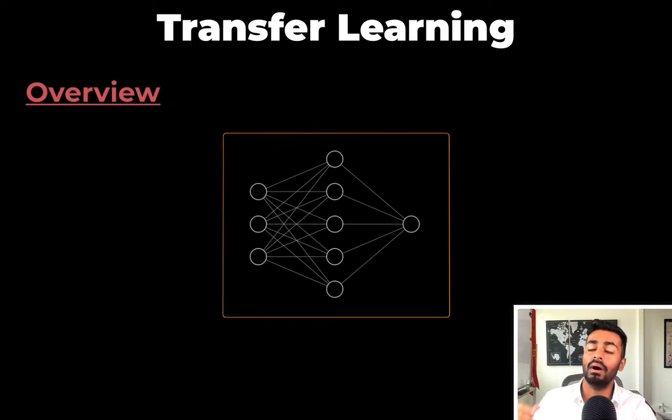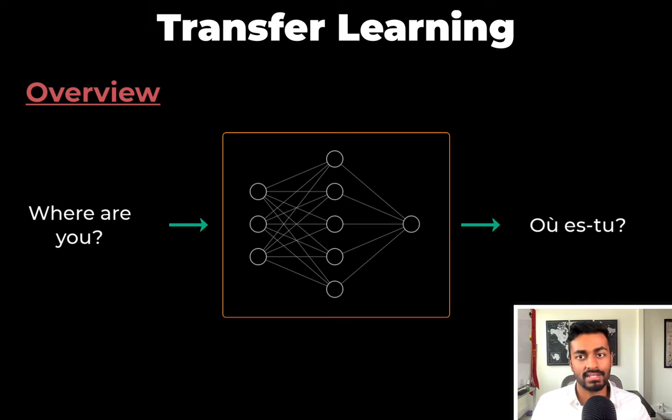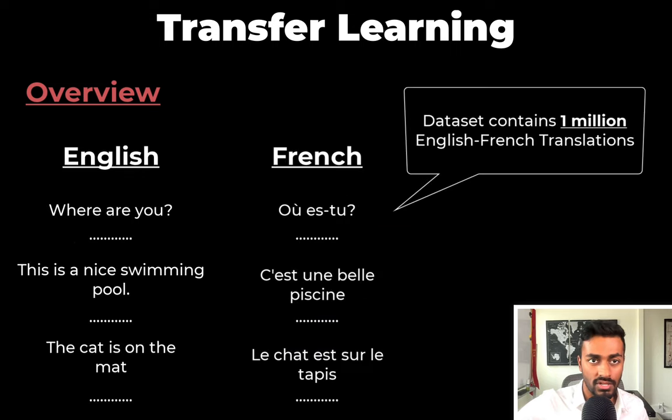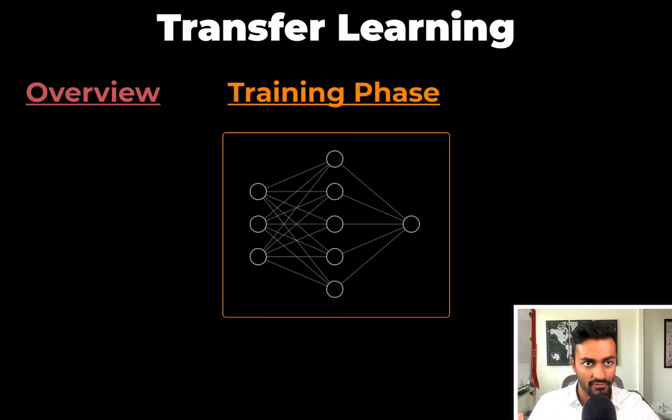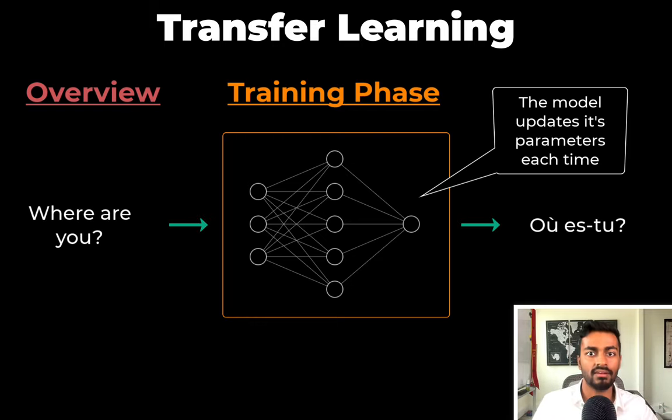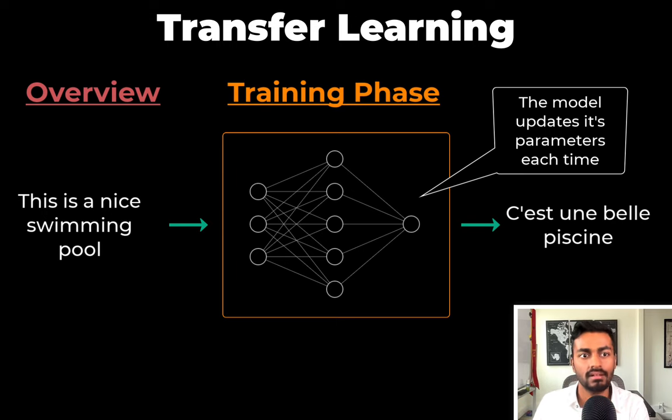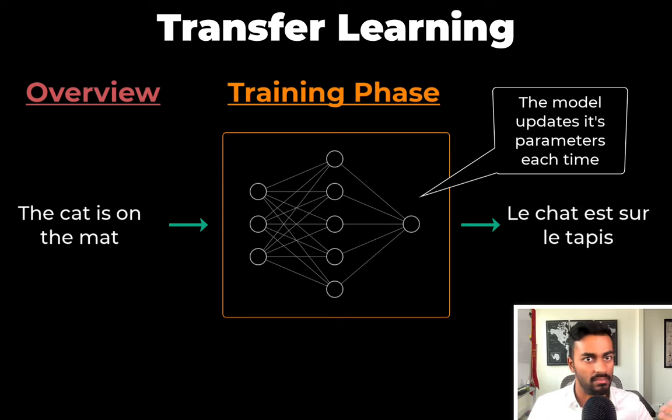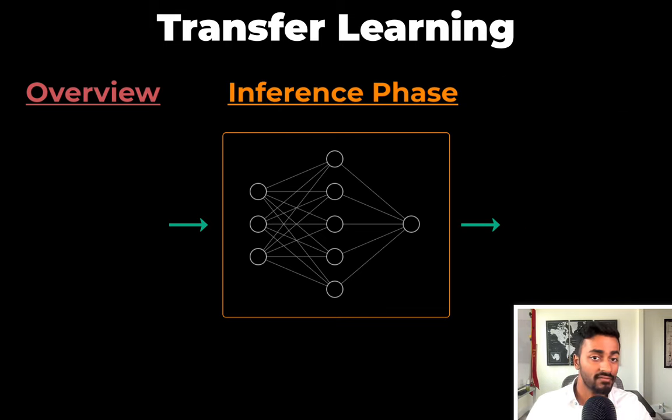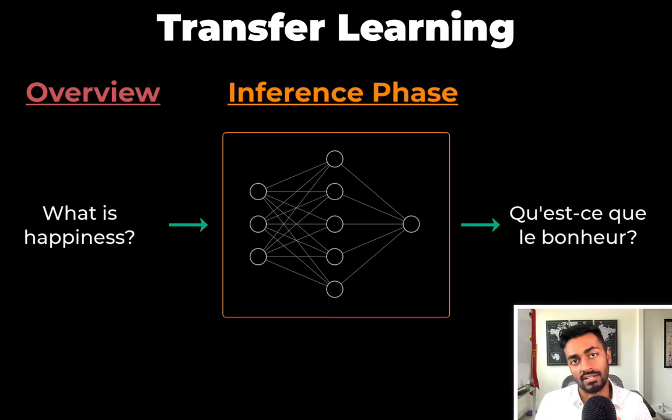Now let's say that we want to perform another related task, where we translate a given English sentence to a French sentence. So to do so, we will construct a dataset of, let's say again, 1 million English sentences with their French translations. We start with an untrained network, and during the training phase of the network, we pass English-French pairs to the model and update the model parameters. Now during the inference phase, the model can take an unseen English sentence and then produce a French translation.